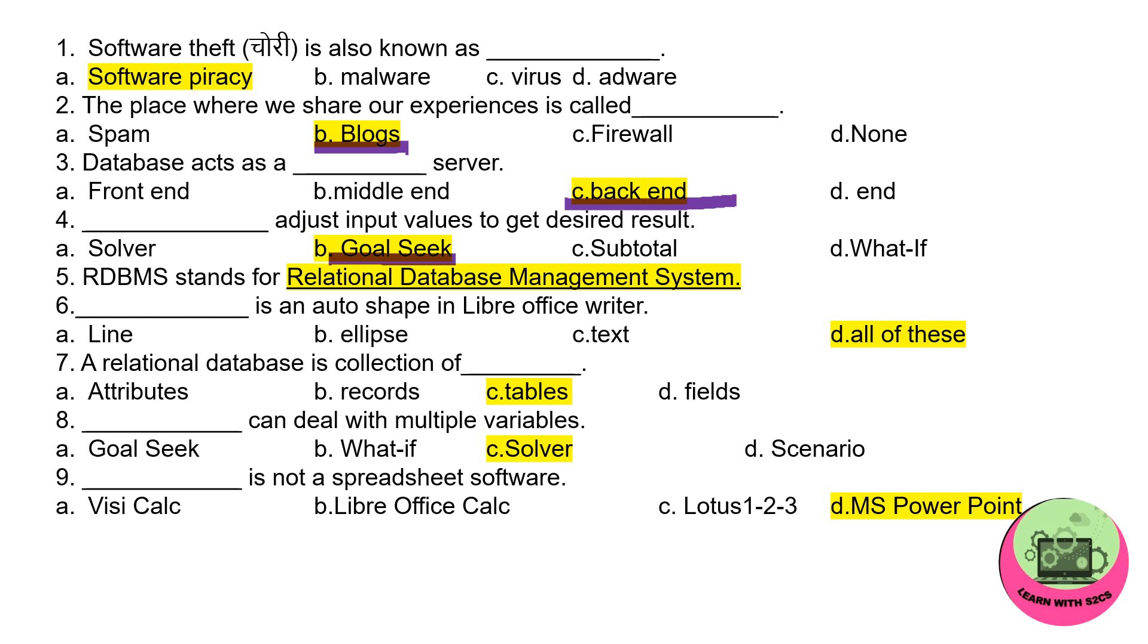A relational database is a collection of tables. One more thing you can remember: the collection of fields will be termed as records, and the collection of records will be termed as tables, and the collection of tables makes a database. Eighth one: dash can deal with multiple variables, so Solver will be the answer here.